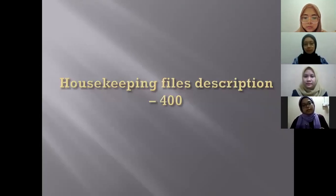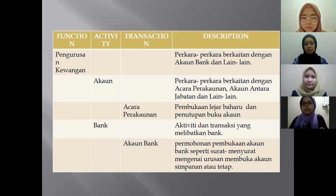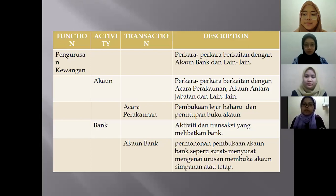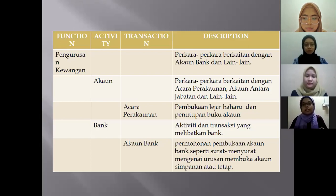Housekeeping file description for code 400 covers pengurusan kewangan, divided into account and bank. For account, it covers perkara berkaitan dengan acara perekaunan, akaun antara jabatan dan lain-lain. The transaction is acara perekaunan — pembukaan lejar baharu dan penutupan buku akaun pada awal bulan dan akhir bulan. For bank, it covers aktiviti dan transaksi yang melibatkan bank. The transaction is akaun bank — permohonan pembukaan akaun bank, seperti surat menyurat mengenai urusan membuka akaun simpanan atau tetap.